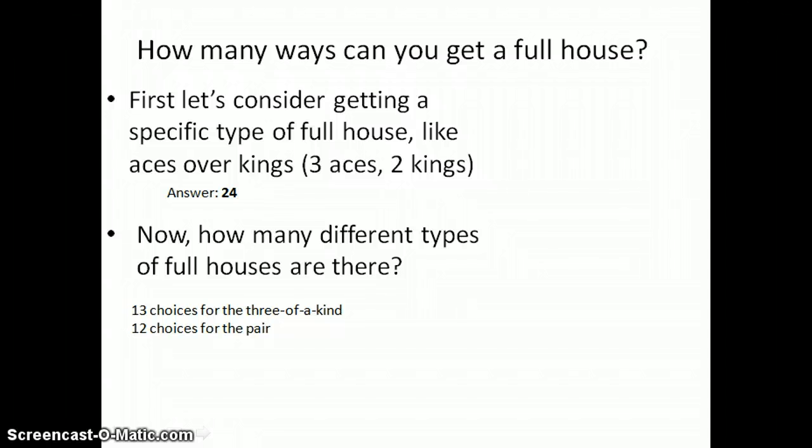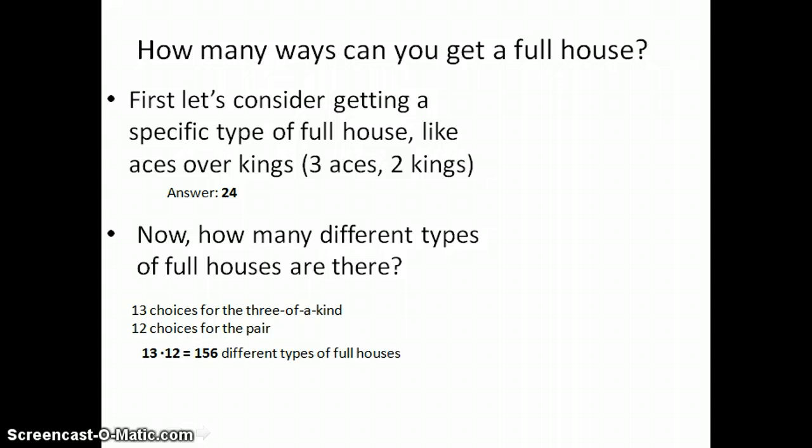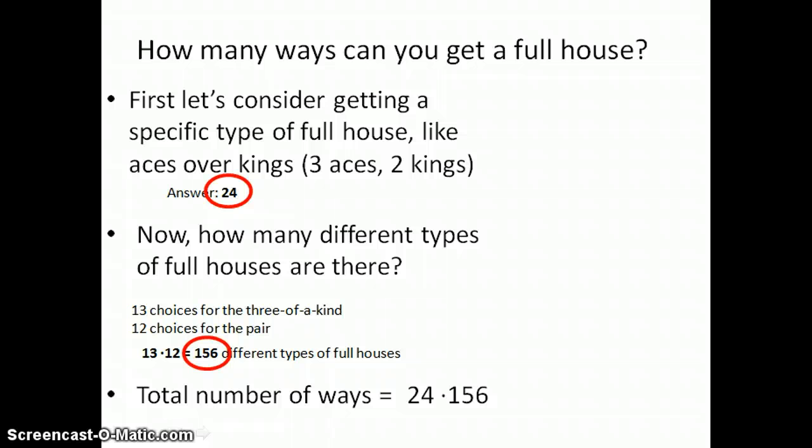So the total number of types of full houses would be 13 times 12, or 156. Now we have 24 ways to get each type and 156 different types. So multiply those two numbers together to find the total number of ways, and we end up with 3,744 ways to get a full house.